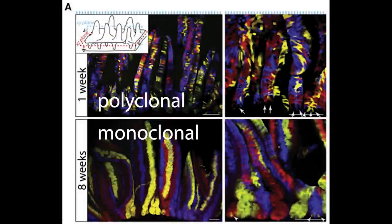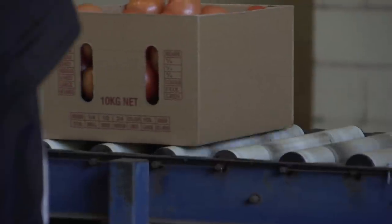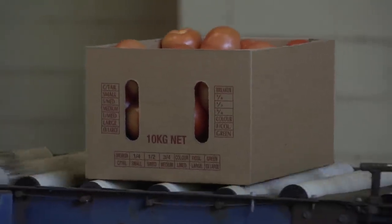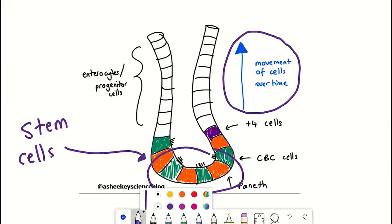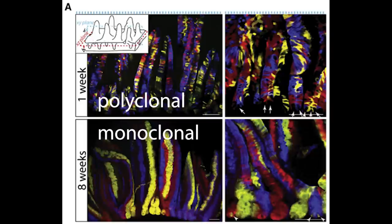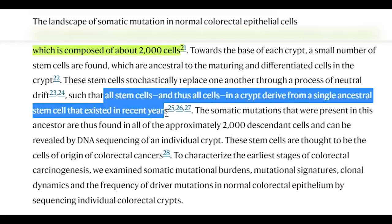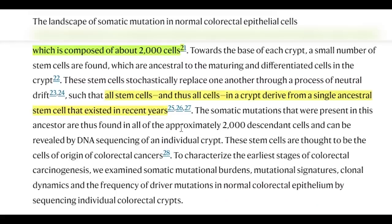A previous study beautifully illustrated this phenomenon using different coloured fluorescent markers. You can sort of think of the crypt like a conveyor belt or an escalator of how the cells progress. This organisation of the crypt has a unique feature: due to this domination by a stem cell, all cells in a crypt are derived from a single ancestral stem cell that existed in recent years. That is to say, if there was a mutation in the stem cell, then all the cells would possess it.